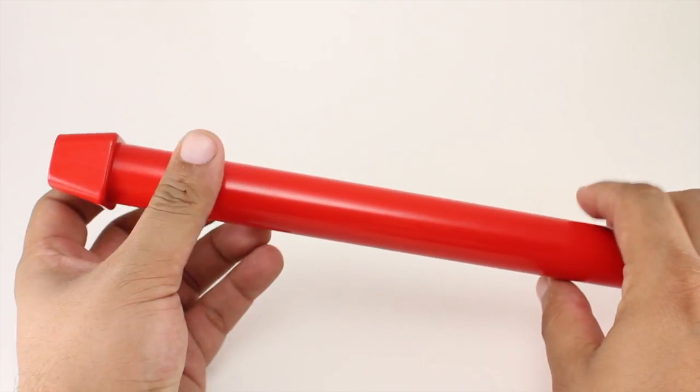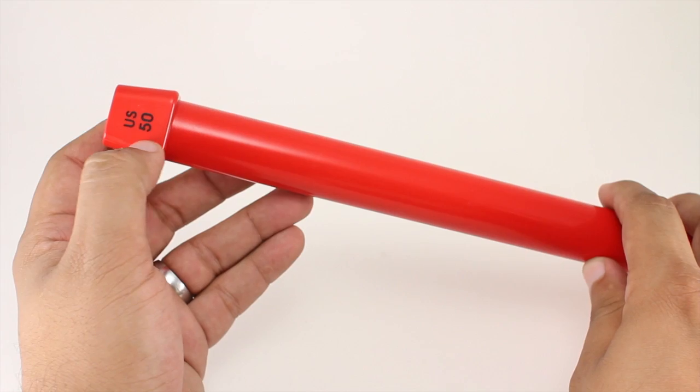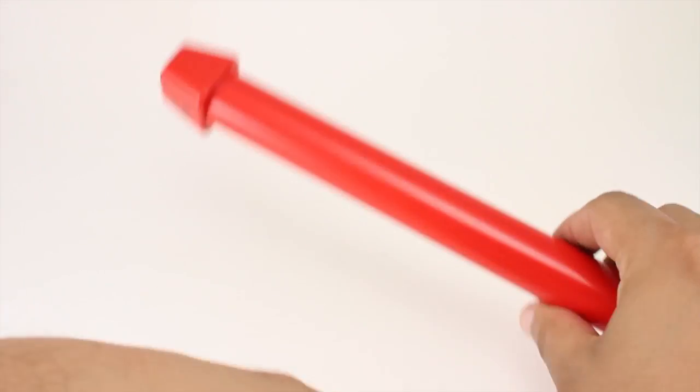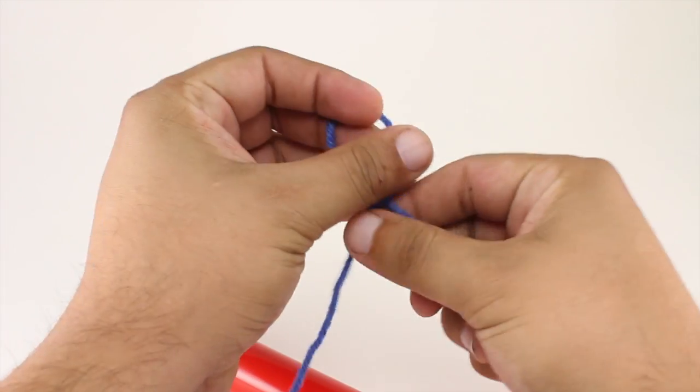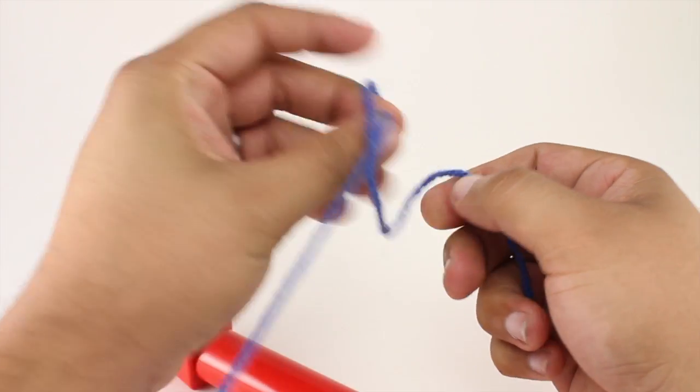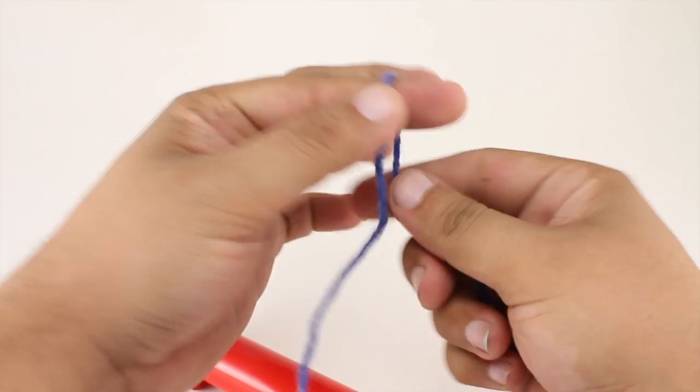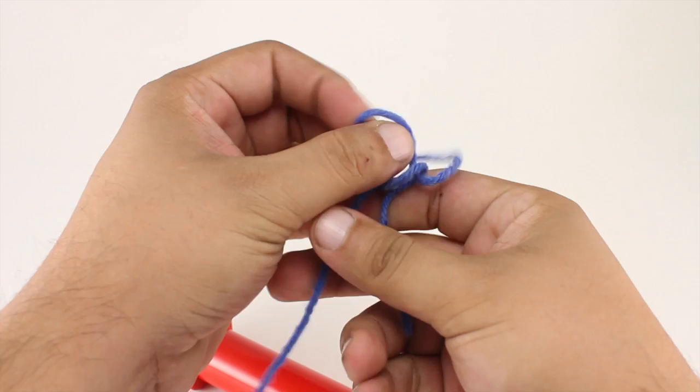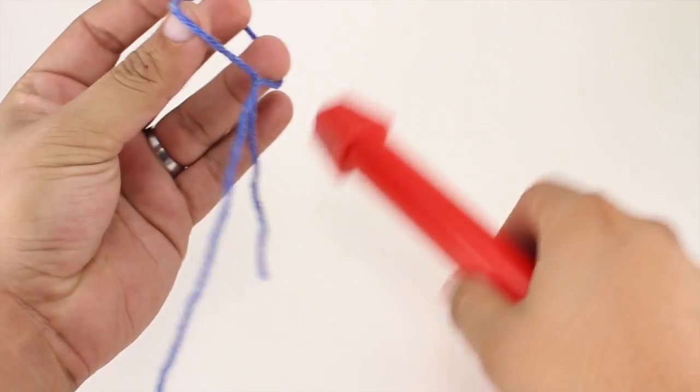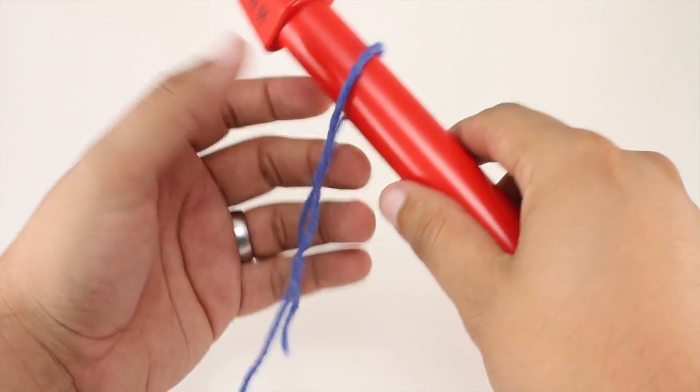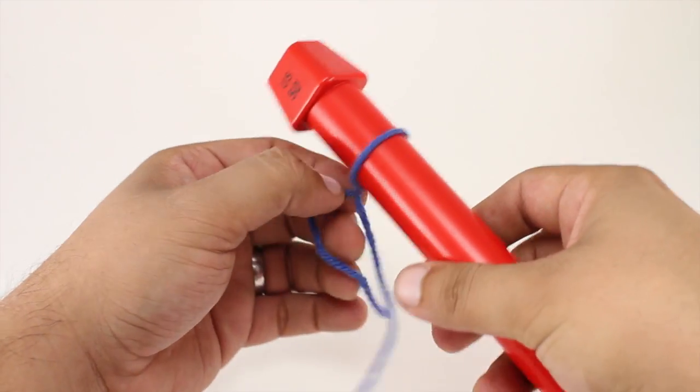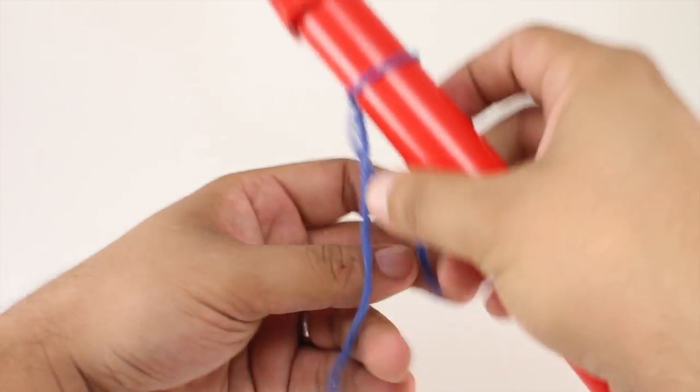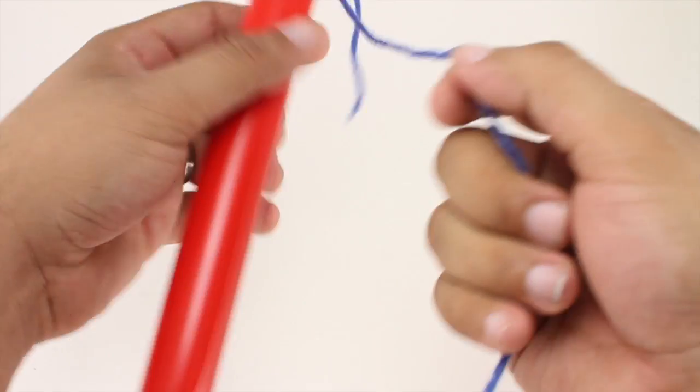I generally use a size US 50 needle for this, and I'm going to show you how I do it. We're going to take our loose end of yarn and make a big slipknot. There we go. I'm just going to place this on the end of the needle. It doesn't really matter which end; I just prefer this end.